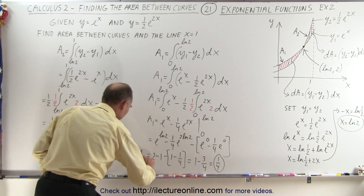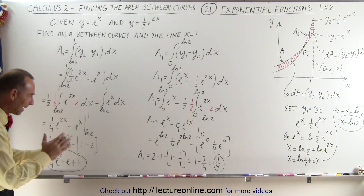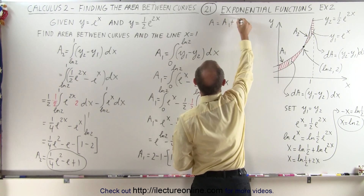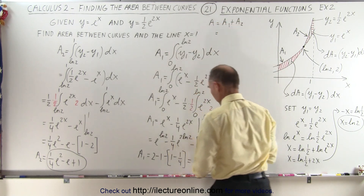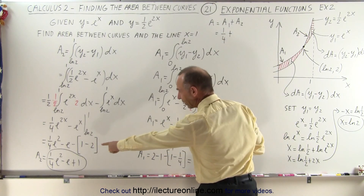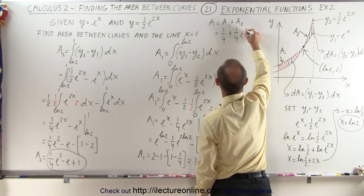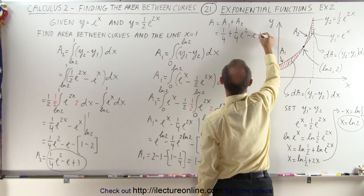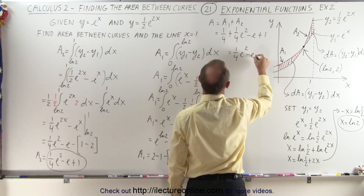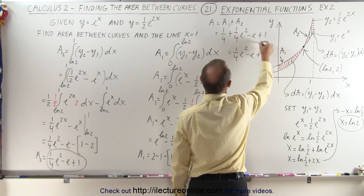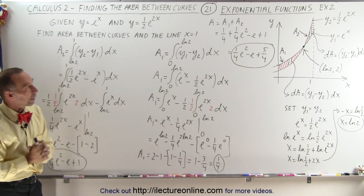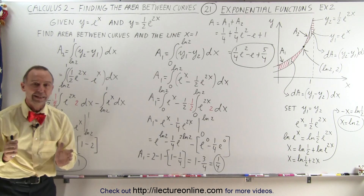So here's A1 and there's A2. Adding them together: A equals A1 plus A2 equals 1 quarter plus 1 quarter e squared minus e plus 1. When we add all that together, we get 1 quarter e squared minus e plus 5 over 4. That is the area of both segments combined — the area bounded between the two exponential curves. And that's how it's done.